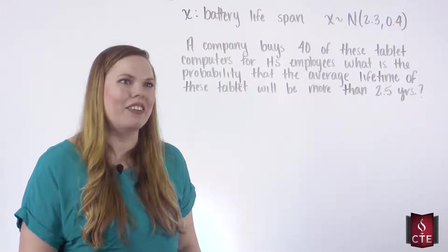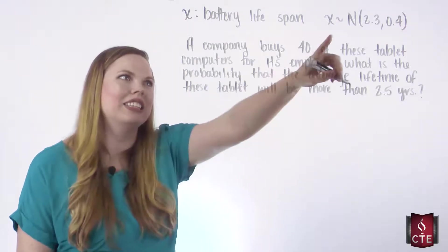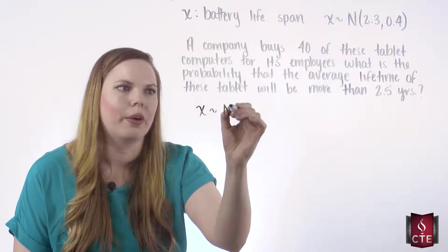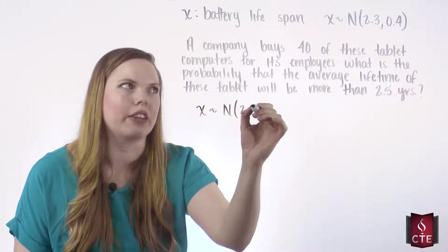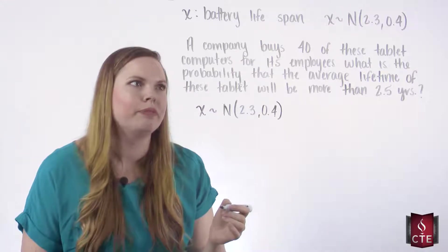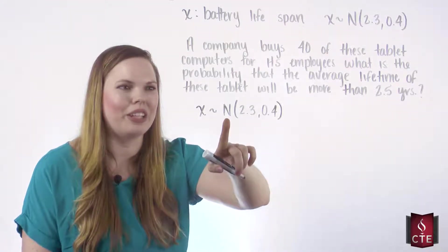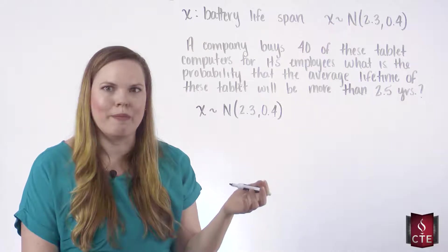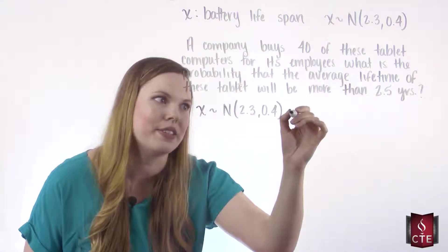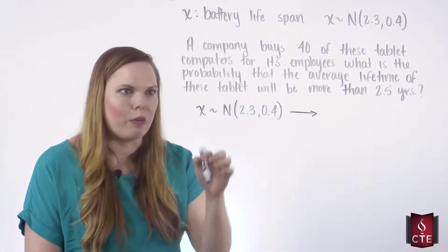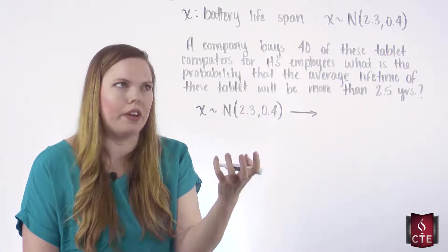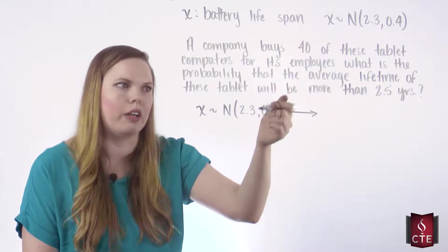Because of the central limit theorem, since X is normally distributed with a mean of 2.3 and a standard deviation of 0.4, it really doesn't even matter how many we get. It doesn't even have to be normally distributed as long as we are getting more than 30, and we meet both of those requirements here.